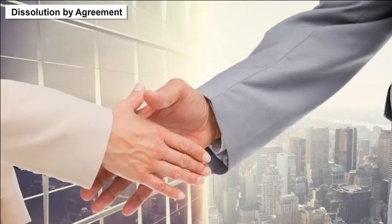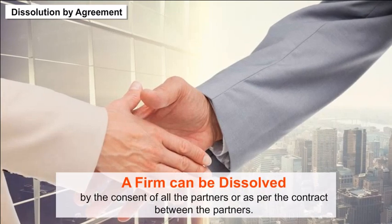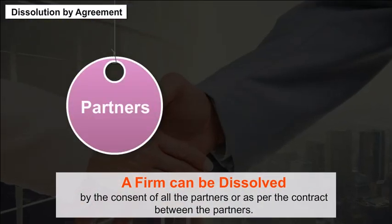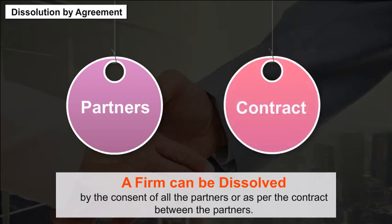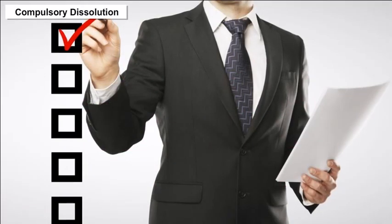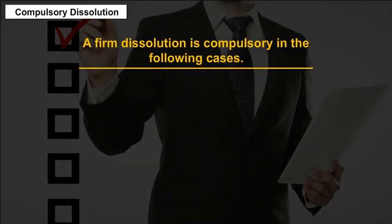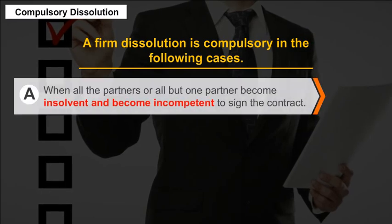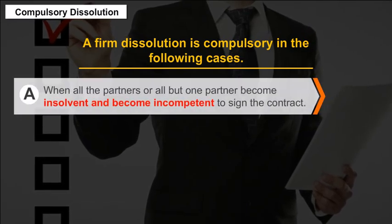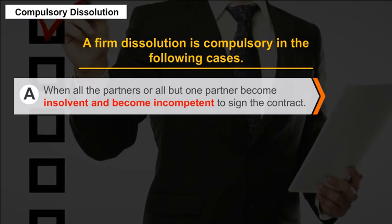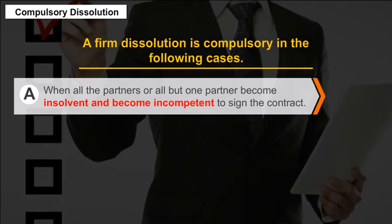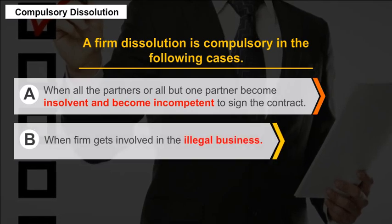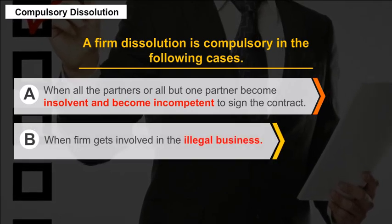Dissolution by Agreement: A firm can be dissolved by the consent of all the partners or as per the contract between the partners. Compulsory Dissolution: A firm dissolution is compulsory in the following cases: (A) when all the partners or all but one partner become insolvent and become incompetent to sign the contract, (B) when the firm gets involved in illegal business.